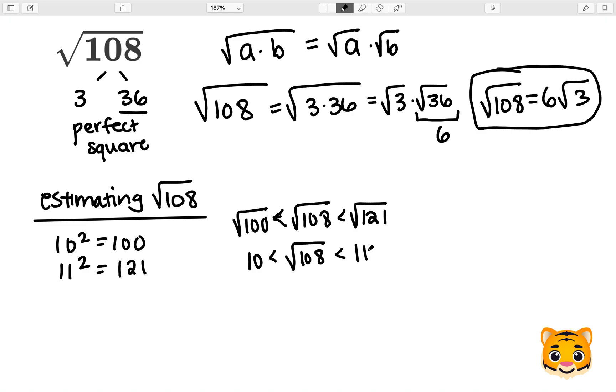In order to find the integer that 108 is closest to, we can look at the difference between 108 and the two perfect squares by subtracting. So we'll do 108 minus 100 to get 8, and then 121 minus 108 to get 13.